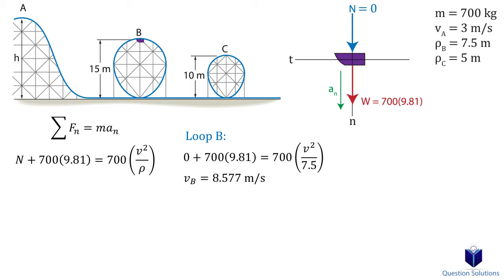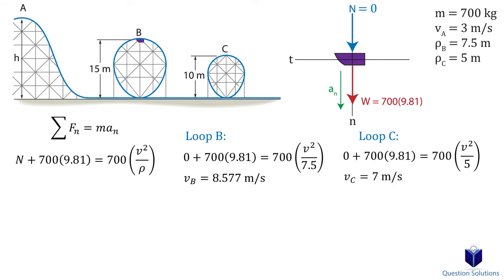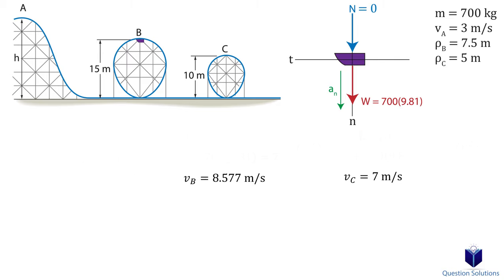Now we do the same for loop C, which has a radius of curvature of 5 meters. The velocities we found show the minimum velocity required for the car to stay on the track. If the velocity is less than that, the car will fall off. Now we can switch to conservation of energy.